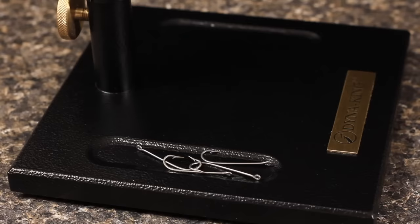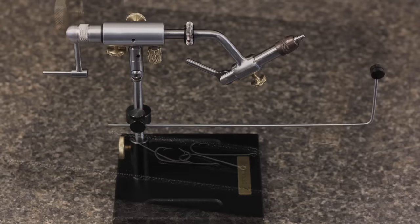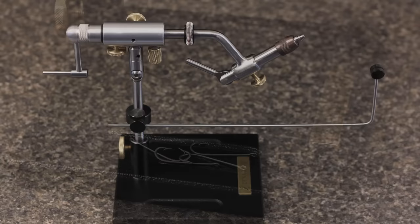Shallow detents in the base are perfect for holding small items such as hooks and beads. And that's the Ultimate Indexer from Dynaking, manufacturers of the world's finest handcrafted fly tying vices and accessories.